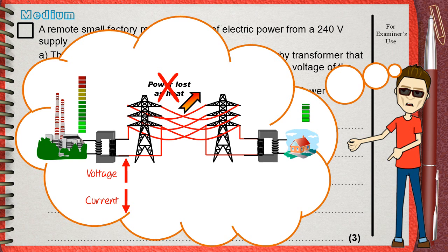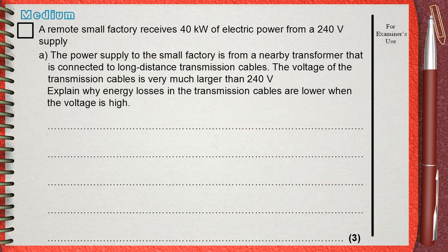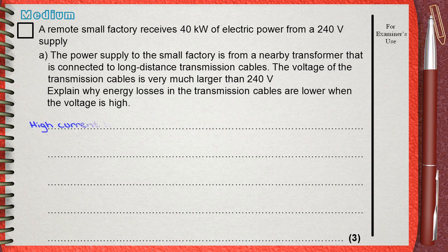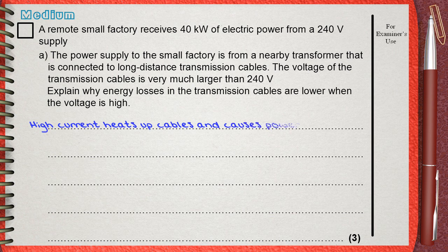So, when he asks explain why energy losses in the transmission cables are lower when the voltage is high, we can answer high current heats up cables and causes power loss. P equals I squared R.